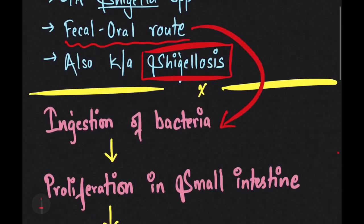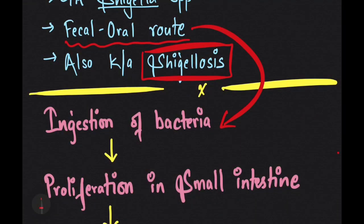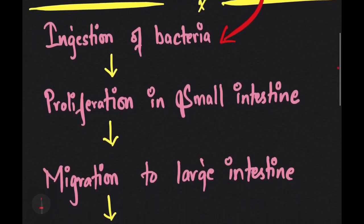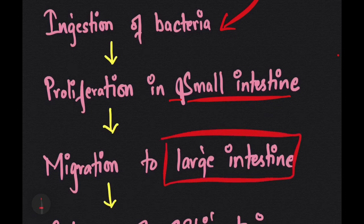These bacteria are also unaffected by stomach acidity, so they finally move towards the small intestine. However, this is not their primary site, so they migrate towards the large intestine.